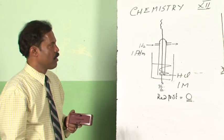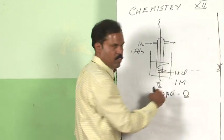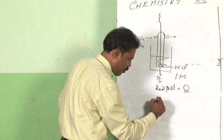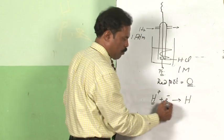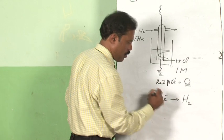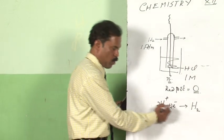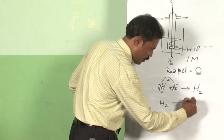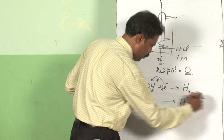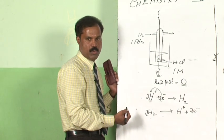Why is there hydrochloric acid as well as hydrogen gas? This cell should be able to act as an oxidation half as well as a reduction half. When it has to accept electrons, the hydrogen ions accept electrons to form hydrogen gas — it acts as the reduction half because it is getting reduced. When it has to act as an oxidation half, this will undergo oxidation to form two electrons. So the hydrogen electrode is able to act both as the reduction half and the oxidation half as the case may be.